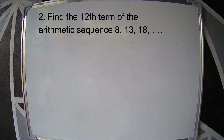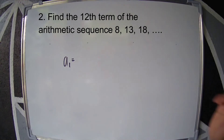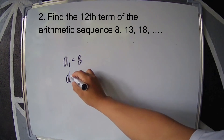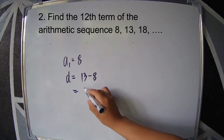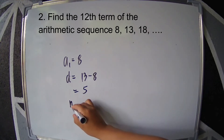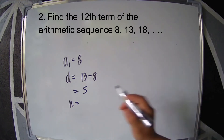Example 2: Find the 12th term of the arithmetic sequence 8, 13, 18. The first term is 8. The common difference is 13 minus 8, that is 5. Since we're looking for the 12th term, n is 12.